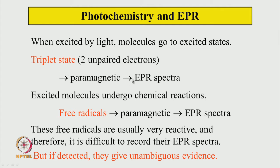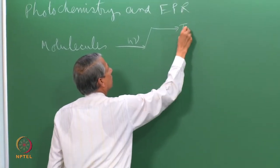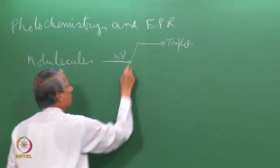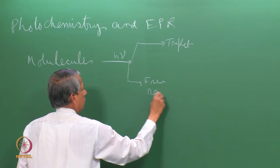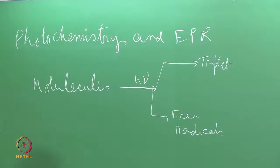The triplet can give rise to EPR spectra. Similarly, the excited molecule can undergo a chemical reaction, and chemical reactions sometimes produce free radicals. Free radicals also have unpaired electrons and are paramagnetic, so they can also give rise to EPR spectra. So we have two types of possibilities: triplets and free radicals — both can be studied by EPR spectroscopy.